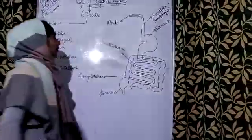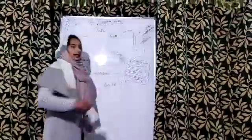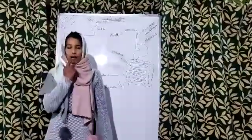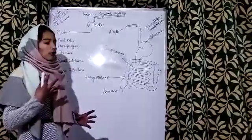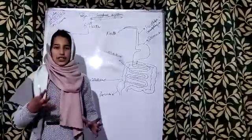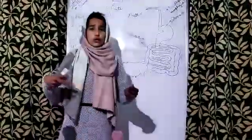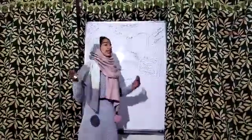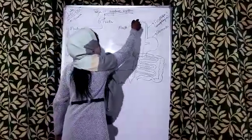The digestion begins in the mouth. In the mouth there are teeth, saliva, and tongue. The teeth help us to chew the food and begin the digestion. The tongue helps us to swallow the food and mix the saliva with the food. Saliva is secreted by the salivary glands.